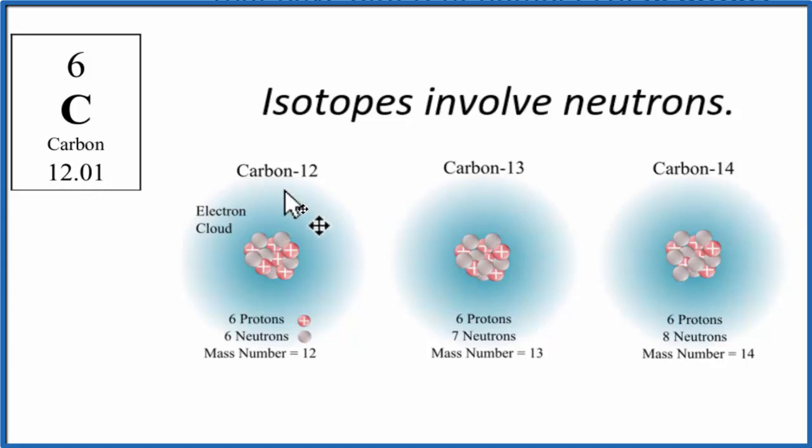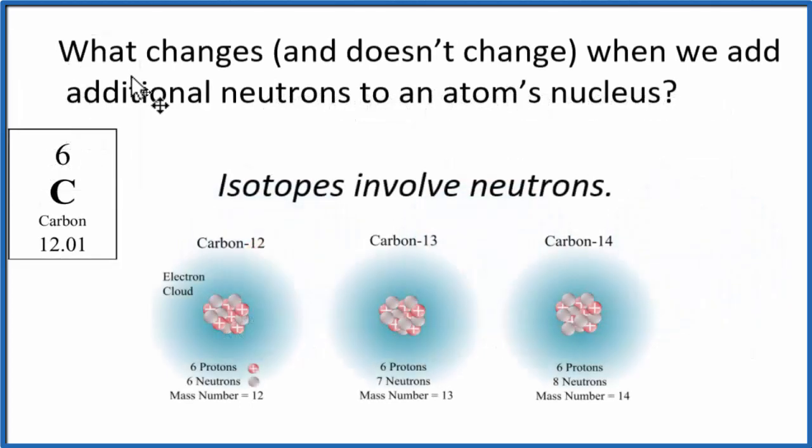So try this to make sure you understand what's going on here. What changes, and what doesn't change, when we add additional neutrons to the nucleus of an atom? Let's start with what doesn't change. We don't change the number of protons, and because of that, it doesn't change the name of the element or the identity. It's still carbon. What does change is the number of neutrons, and when we have more neutrons, that means the mass number increases. Still the same element, carbon, but the individual atoms we call isotopes.